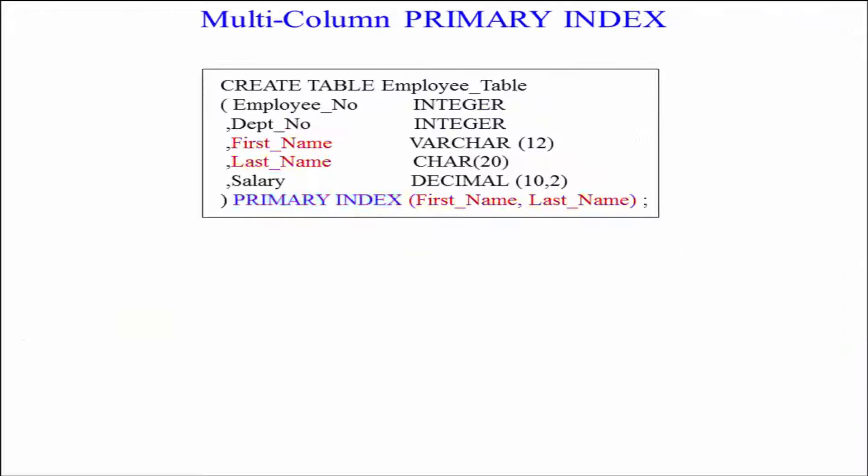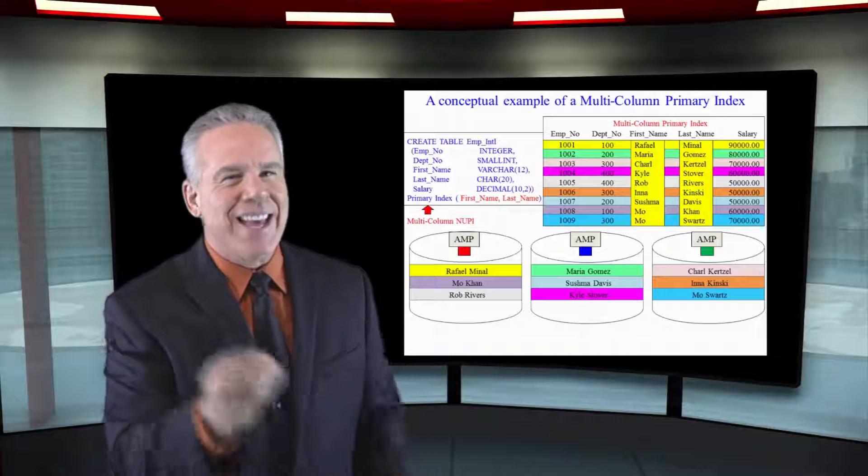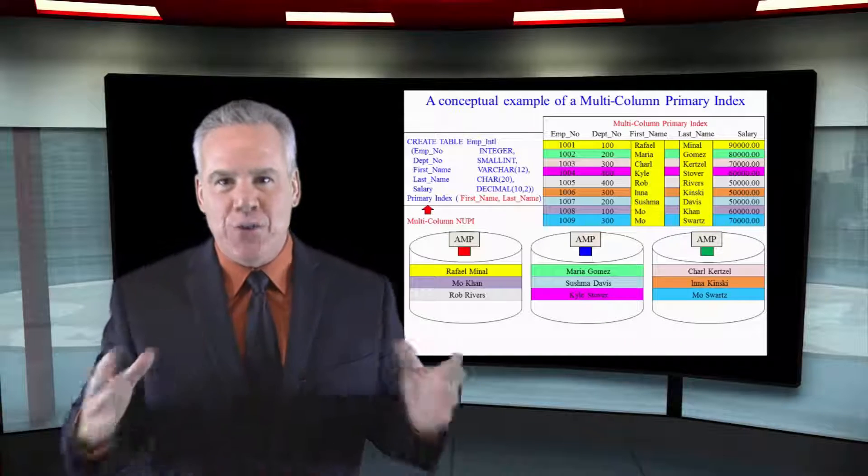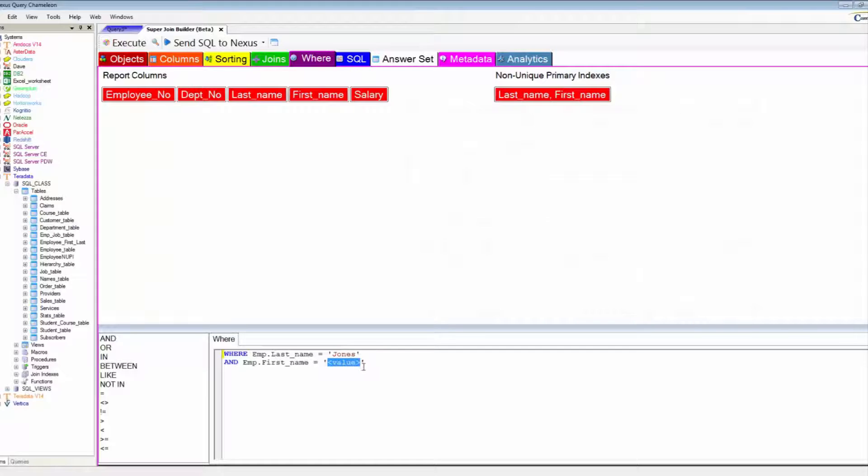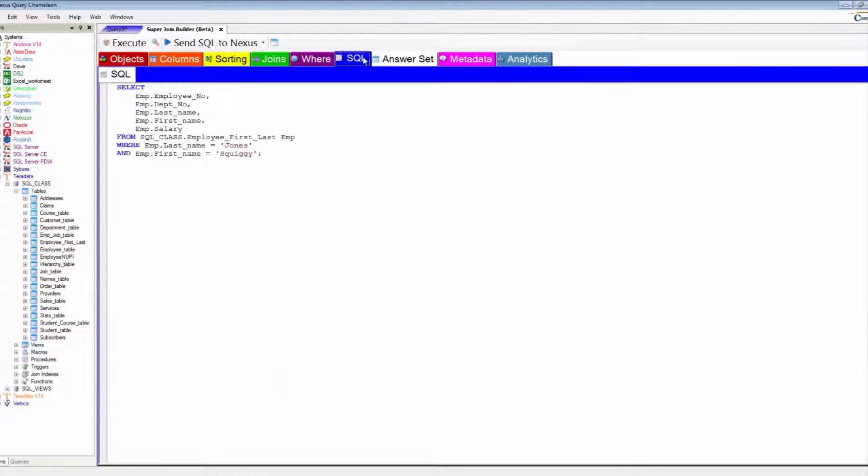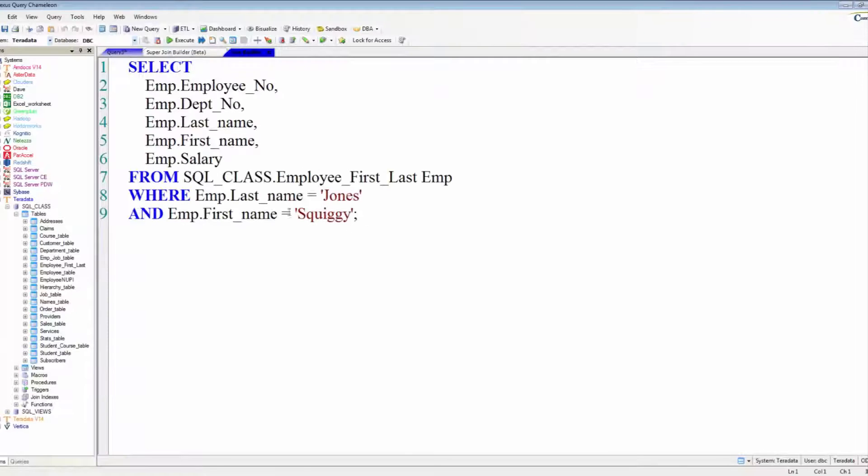Now, we can also have a multi-column primary index. This is going to give us better distribution than just a single key that isn't maybe that unique, but we've got to use both first name and last name, both columns of the multi-column index, and you can have up to 64 of those. You use two in the where and and clause. You're all set.